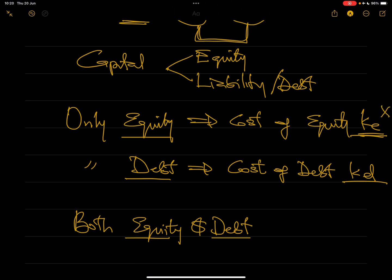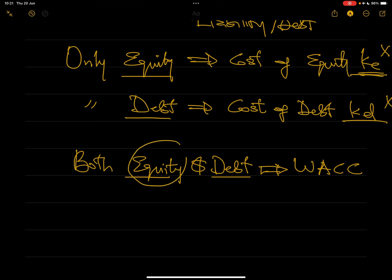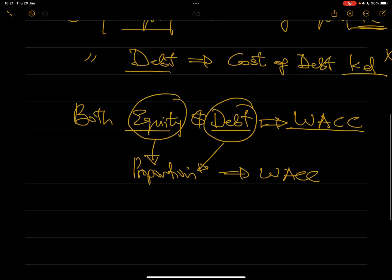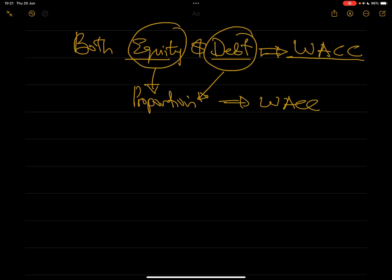When you use this combination of equity and debt, what you have is not purely cost of equity or cost of debt — because there is a combination, it is called WACC. Your cost of fund, because you have mixed equity and debt together, is the Weighted Average Cost of Capital. You need to ask yourself: what is the proportion of equity used and what is the proportion of debt used? Based on those proportions, you weight your cost of capital.